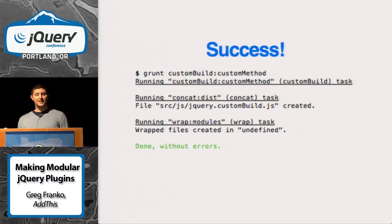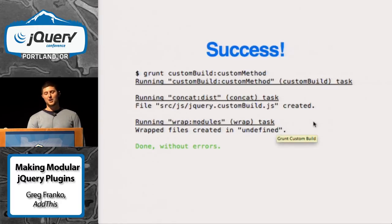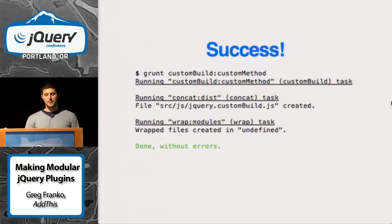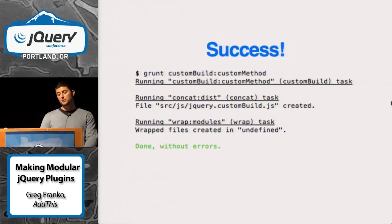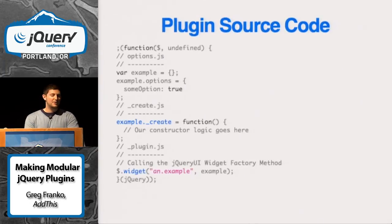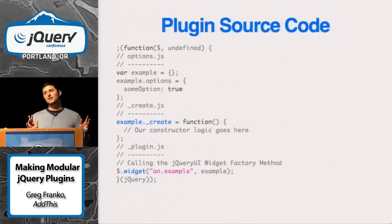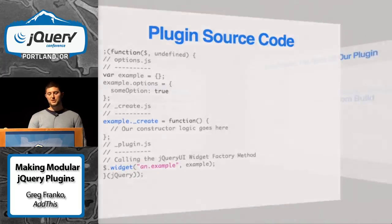Hopefully you'll have a success. Don't worry about the undefined thing — I'll talk to the maintainer of the wrap plugin. Essentially we created our jQuery plugin without custom method.js, without any errors, saving it to the jquery.custombuild.js file. Looking at the source code, you'll see only options.js, underscore create.js, and underscore plugin.js — the underscore custom method.js is no longer there. It makes it really easy to do custom builds.